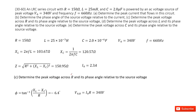Next, we need to determine the peak voltage across R and its phase angle. The peak voltage across R equals the peak current times R, which was found in part 1. For the phase angle relative to the source voltage: R always has the same phase as the current, so this phase angle is just the same as the phase angle of the current with the source voltage — R never brings any phase shift.